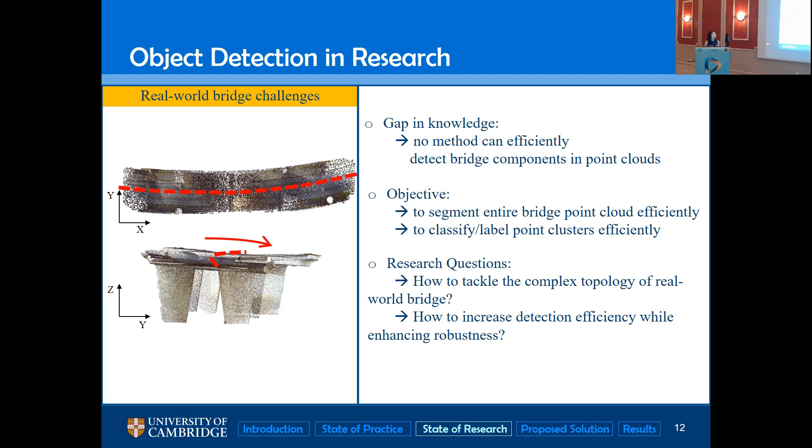So the objective of our work here: First, we aim to segment the entire point cloud efficiently and we aim to assign each point cluster with their class label. We are going to conclude our research by answering two research questions. How can we tackle the complex geometry of a real-world bridge? And how can we increase the detection efficiency while enhancing robustness?